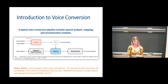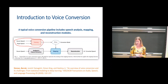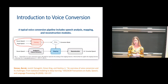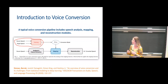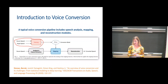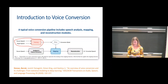During training, we have source and target speech, which can be in one language or in different languages. This dataset can be parallel — meaning source and target are saying the same thing — or non-parallel. We even have cases where we only have one sentence from the target speaker, which we call one-shot learning. So there could be lots of different possibilities for the training.